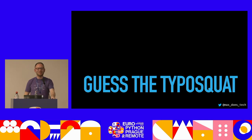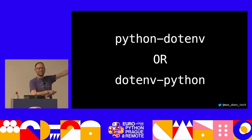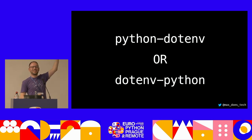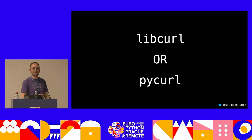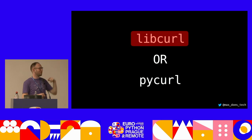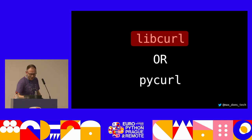Let's play a little game — which of these is malware? One package is real, one isn't. Everyone thinks the bottom one — they're correct. Another round: libcurl or pycurl? This is a sneaky one because libcurl is the actual system package, but the PyPI package that uses it is called pycurl. So libcurl on PyPI was a real typosquat. People are getting quite clever with some of these.